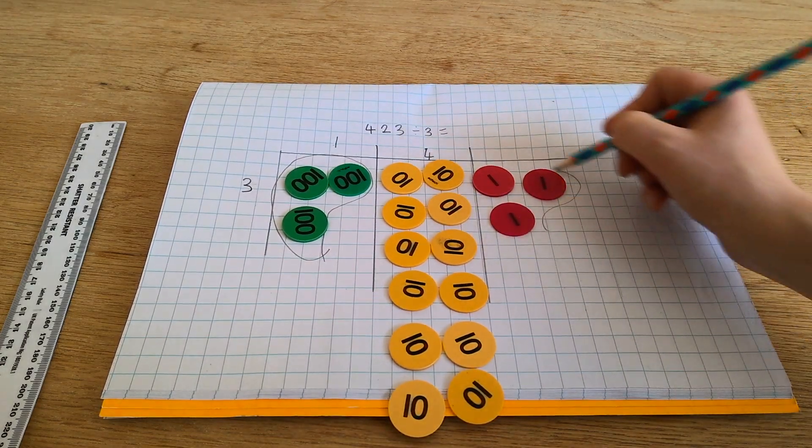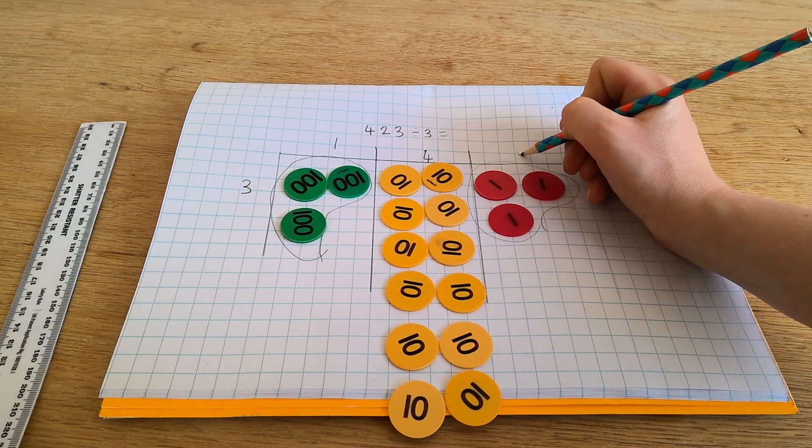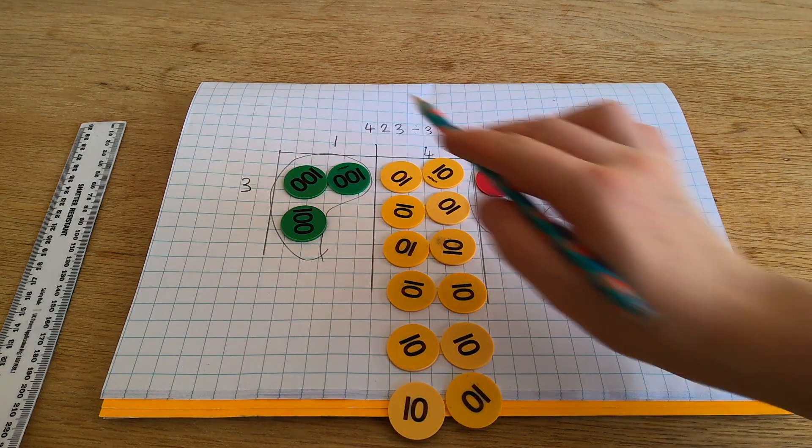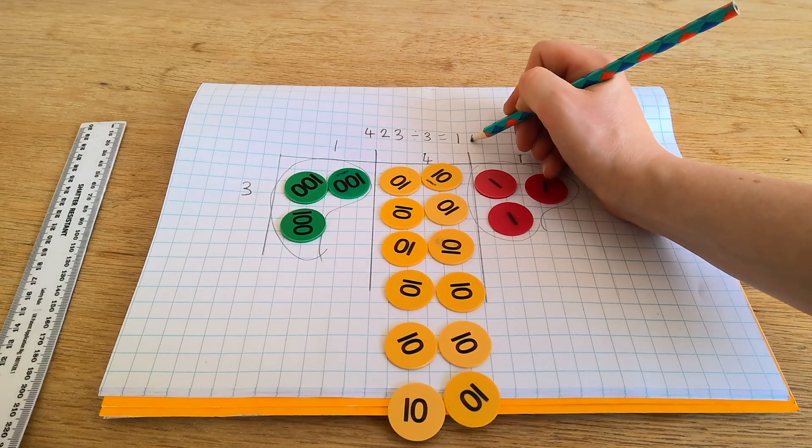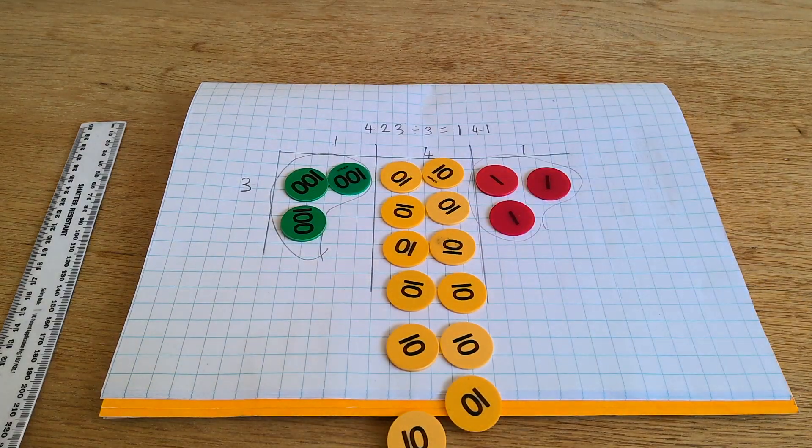And I've got 1 group of 3 ones. So I've got a quotient of 141... 161.